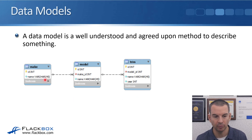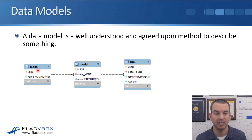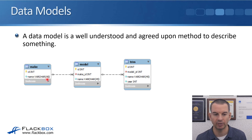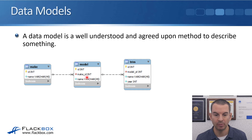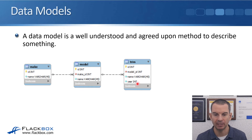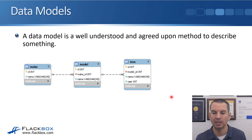At the top level we've got the make, which includes the ID for the make — an integer, meaning it's a number — and the name, which is variable-length characters up to 45 characters. We've also got the model of car with the model ID, which is an integer, then the make ID and the name for the model. And we've got the trim or specifications of the car, which has the trim ID, the model ID, the name, and the year. So a data model is just the recognized and agreed-upon way that your data is going to be laid out and organized.